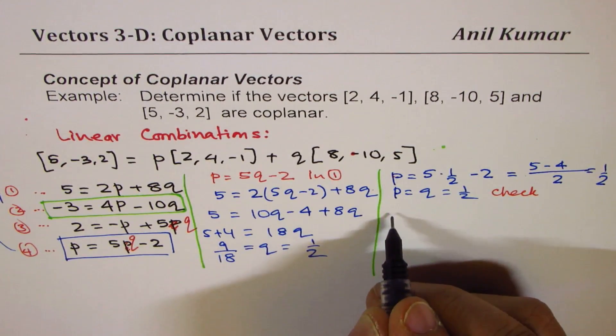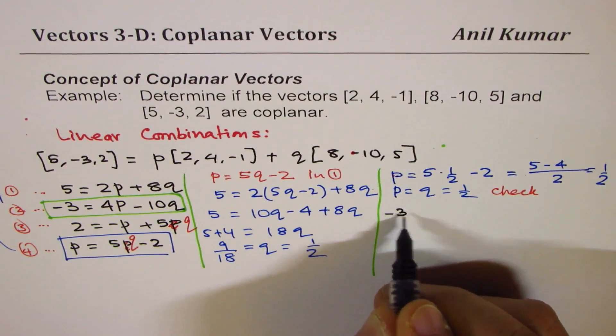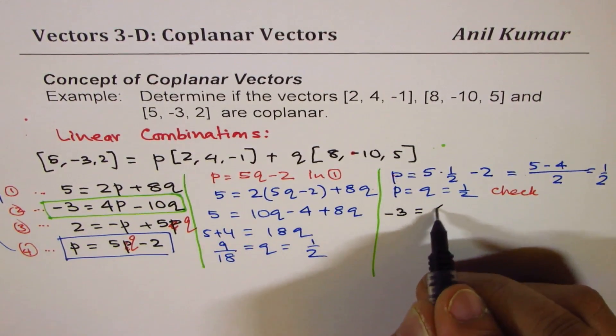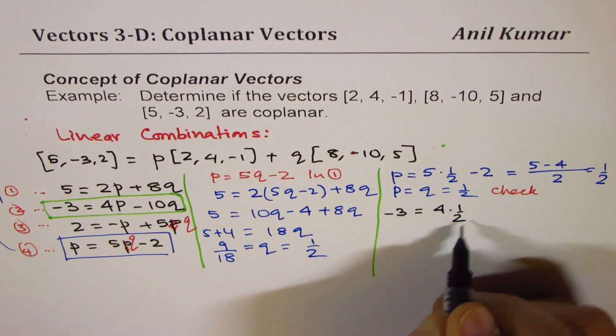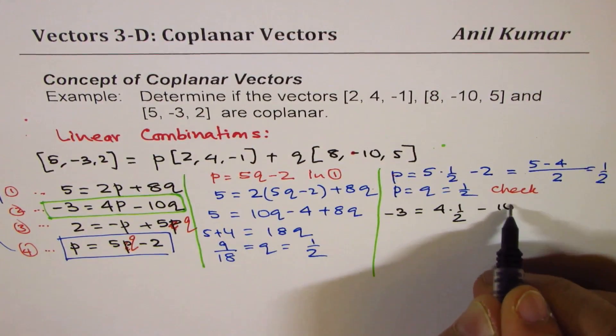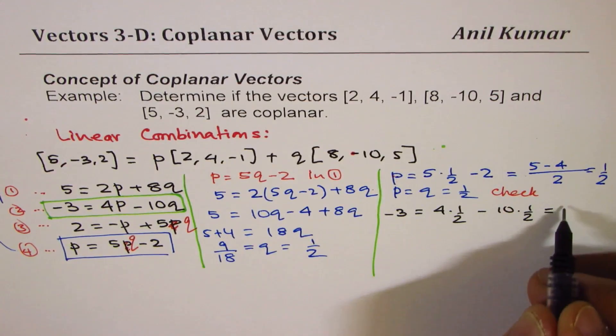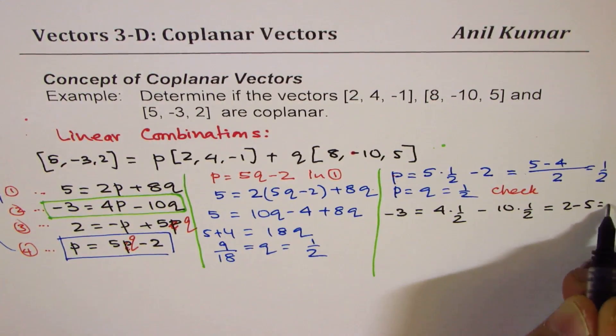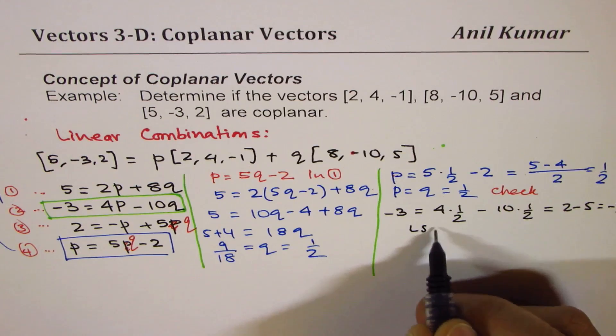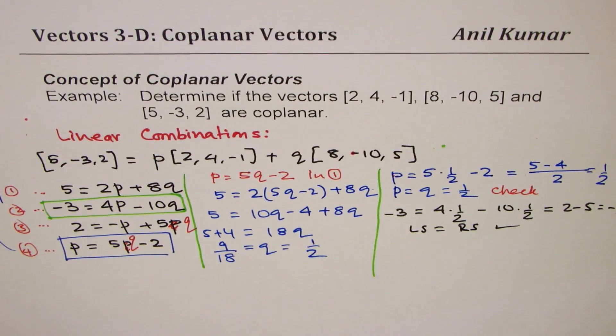Let's check. So what we have here is -3 on the left side. On the right side, we have 4 times P is 1/2 and we have -10 times 1/2. Now that truly gives you 2 minus 5, which is -3. So left side equals to right side. So it works.